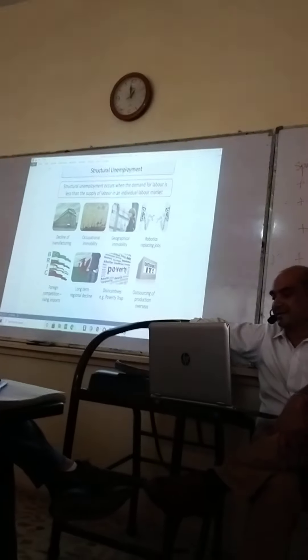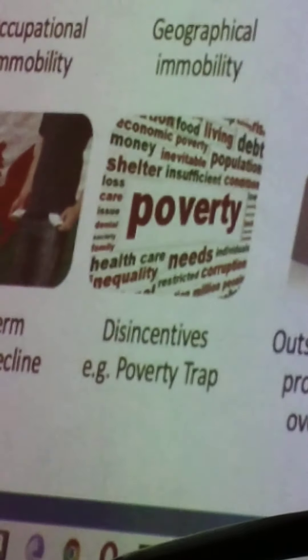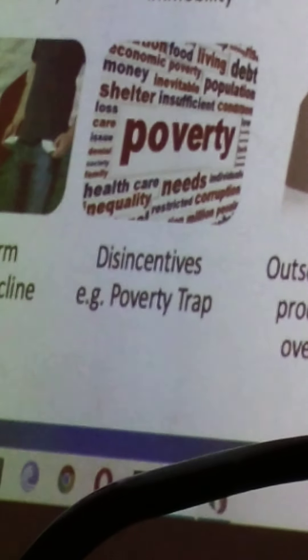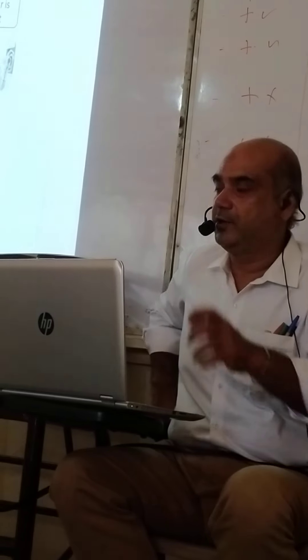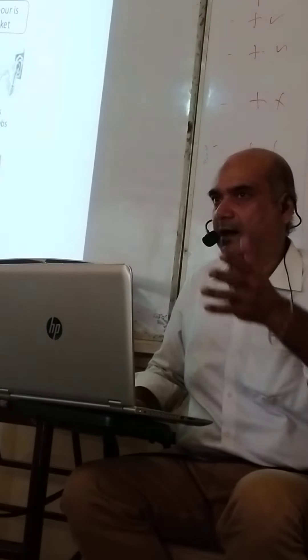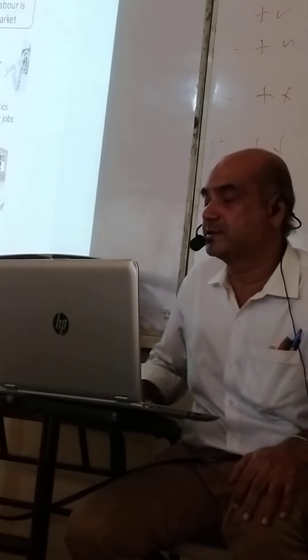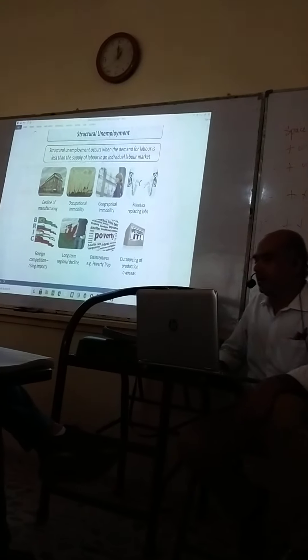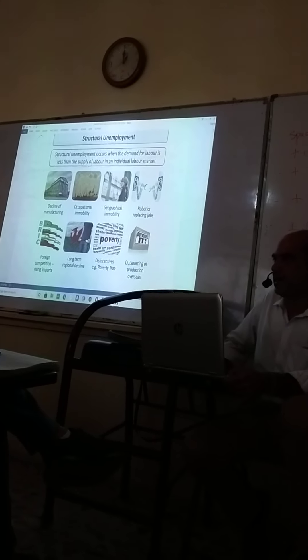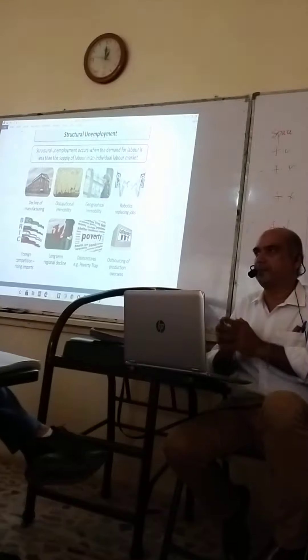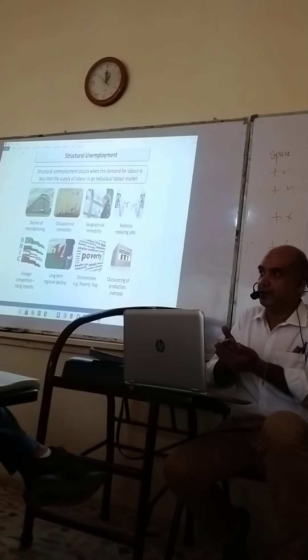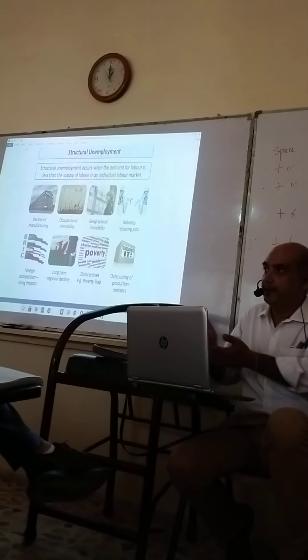Another reason is disincentives, for example the poverty trap. If you are experiencing a vicious circle of poverty, a poor person will have poor children. They will not be able to afford good education, so children will remain unskilled and uneducated, and will face the same problem of unemployment. In smaller towns and villages, farmers engage their own children or family in the farms, thinking that education is useless.